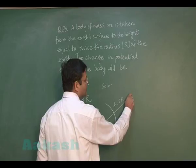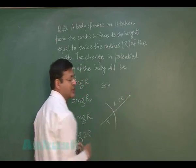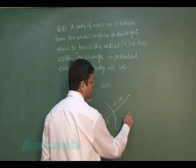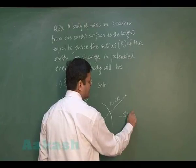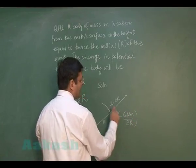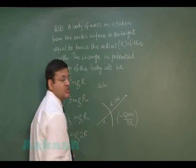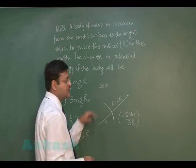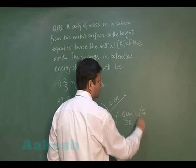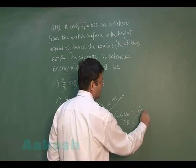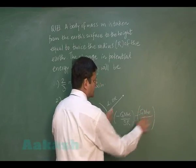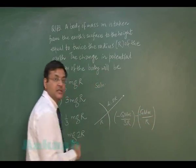This is the final situation and this is the initial situation. The change in potential energy is: minus GMm by 3R (the final potential energy) minus the initial potential energy at the surface, which is minus GMm by R.